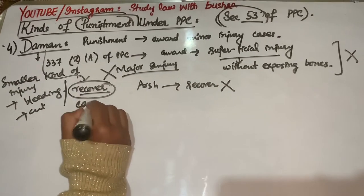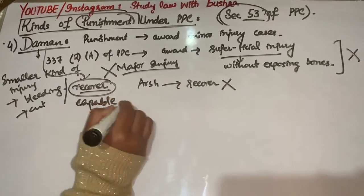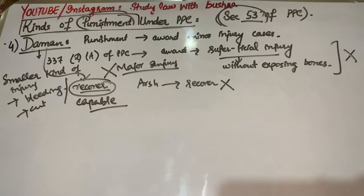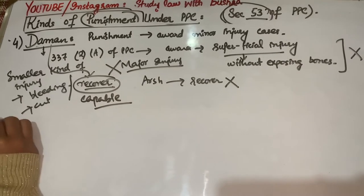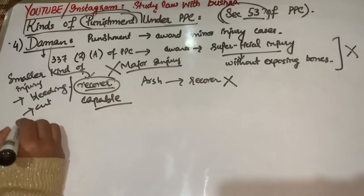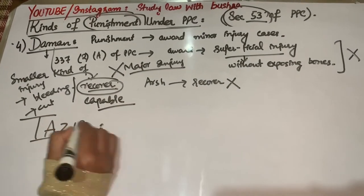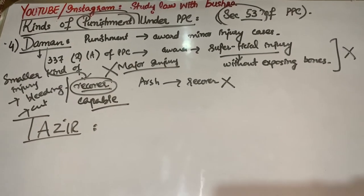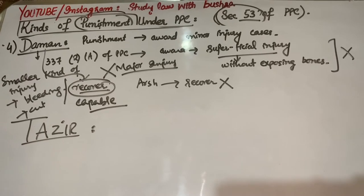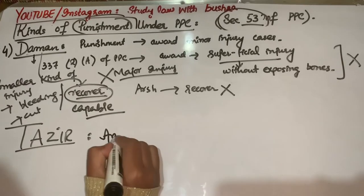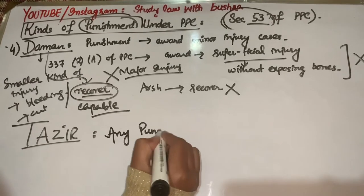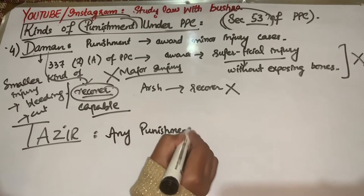Arsh mein hamne kaha ke woh injury jo hum jaldi recover na kar sakein, jo bande ko incapable kar de. While Daman kya hai — jo jaldi recover ho sakti hai, banda phir capable ho jaye.